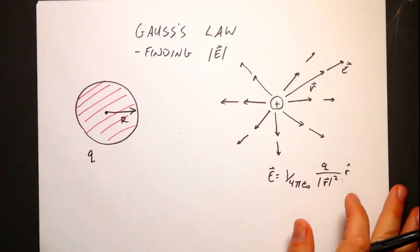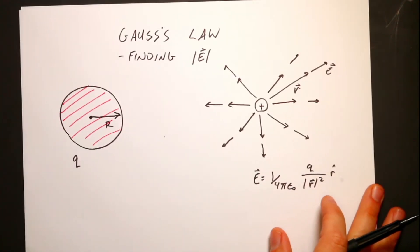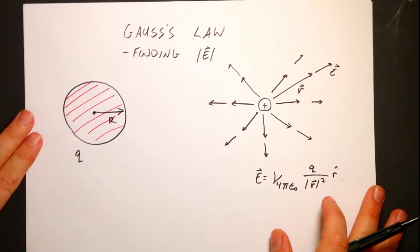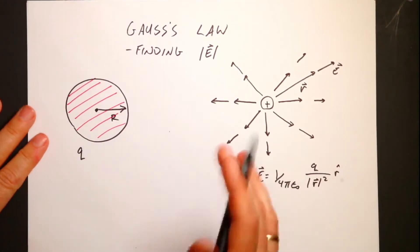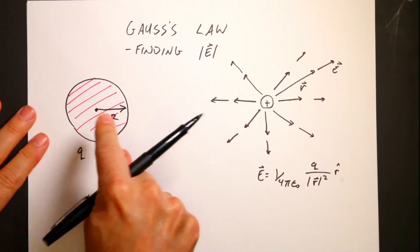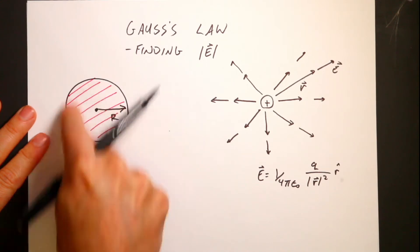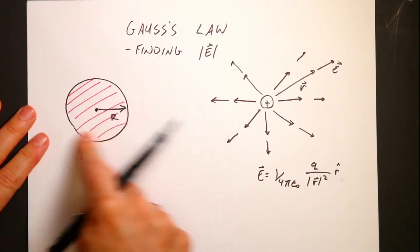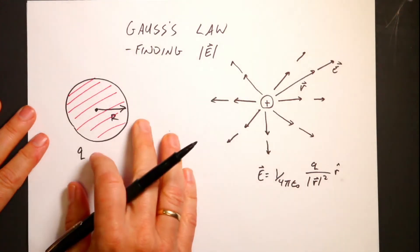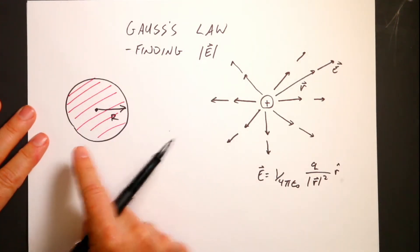Let's think about a point charge. What I'm trying to do in this video is get to this problem: a sphere of radius R with a charge Q spread all over it, and I want to find the electric field. We're going to use Gauss's Law for that.